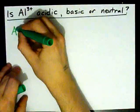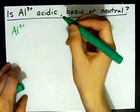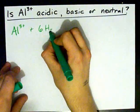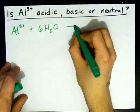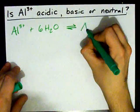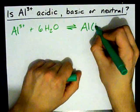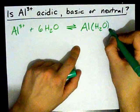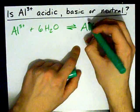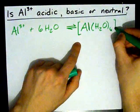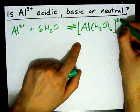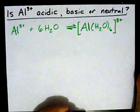Al 3 plus, when it's in water, will actually form a ligand complex. This is an equilibrium between the two, but it makes Al H2O6. Six waters surround the aluminum. For those of you into VSEPR, it's an octahedral arrangement, but that doesn't really matter right now.